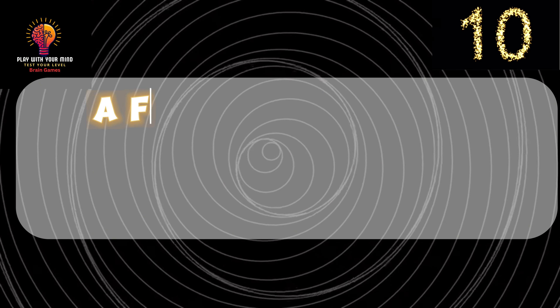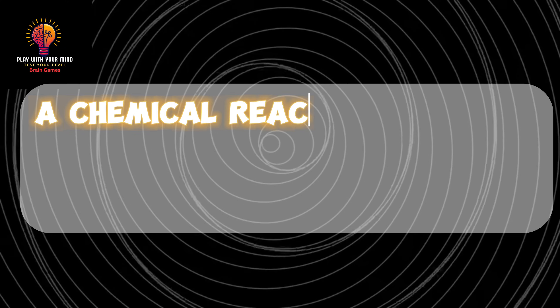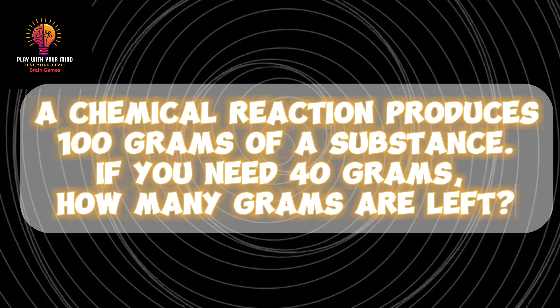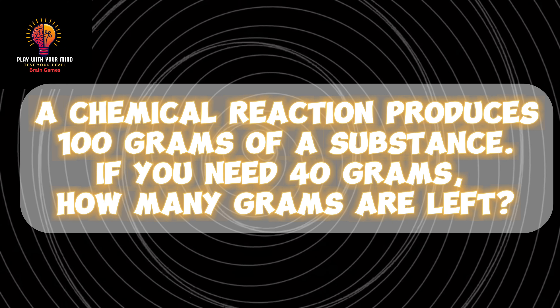You should have used the basic maths rule — the answer is 70 liters. It's time for the last riddle! Did you know any of the answers to the previous ones? Let us know in the comment section below. Riddle 10: a chemical reaction produces 100 grams of a substance. If you need 40 grams, how many grams are left?